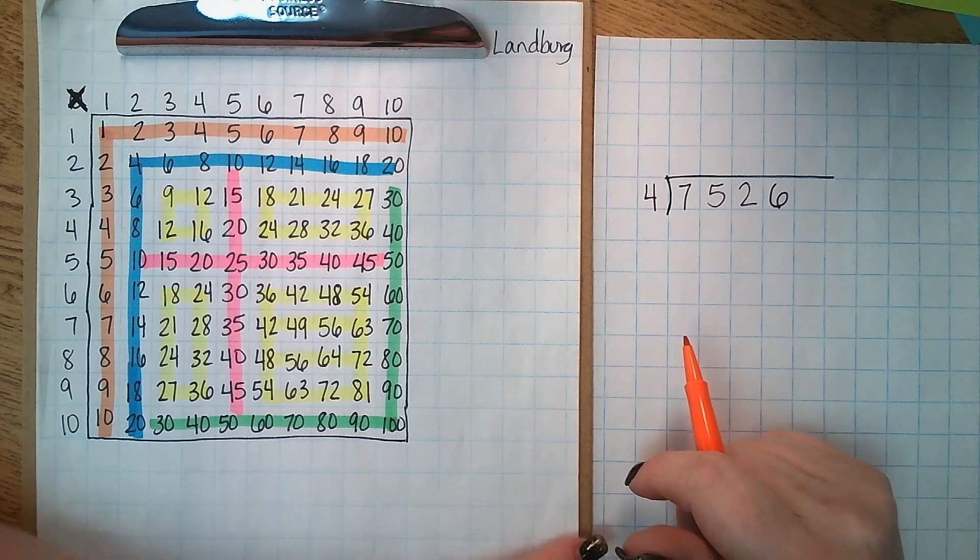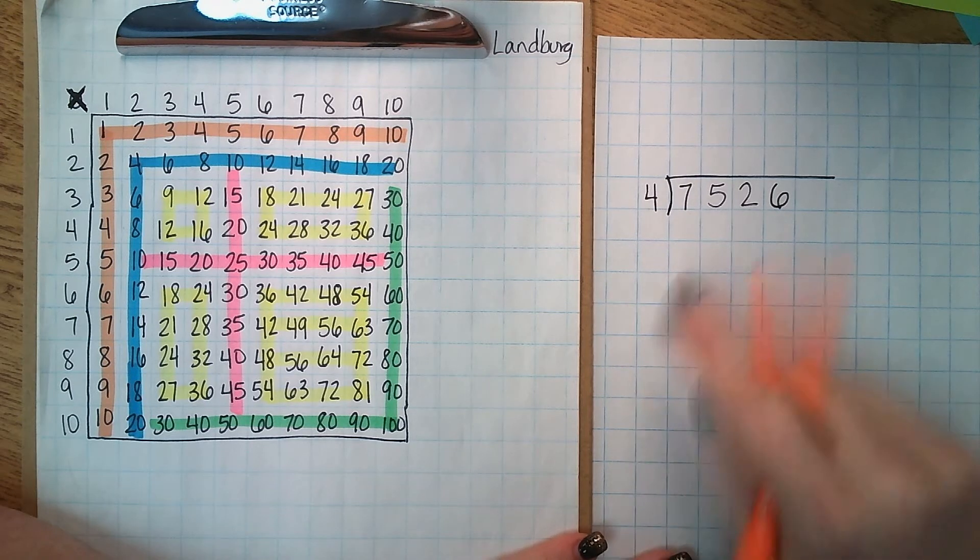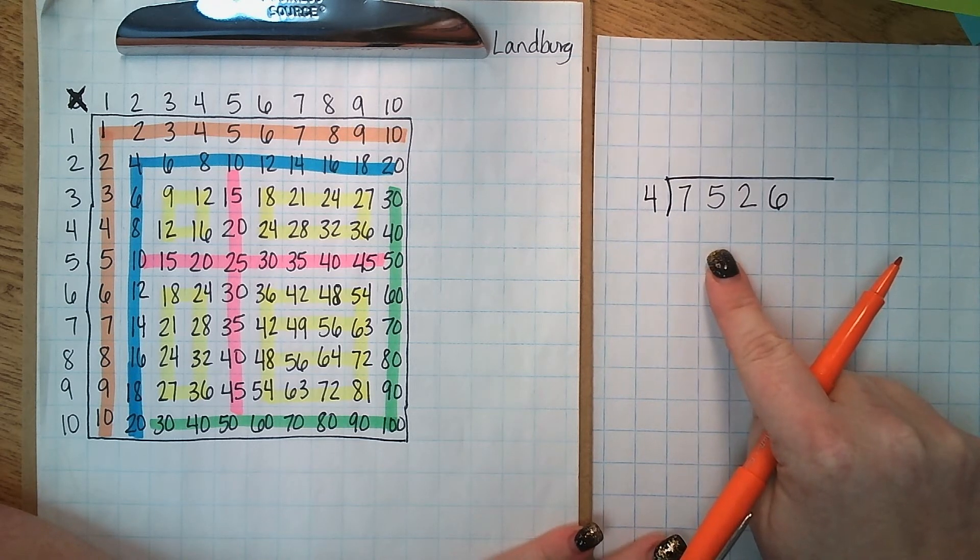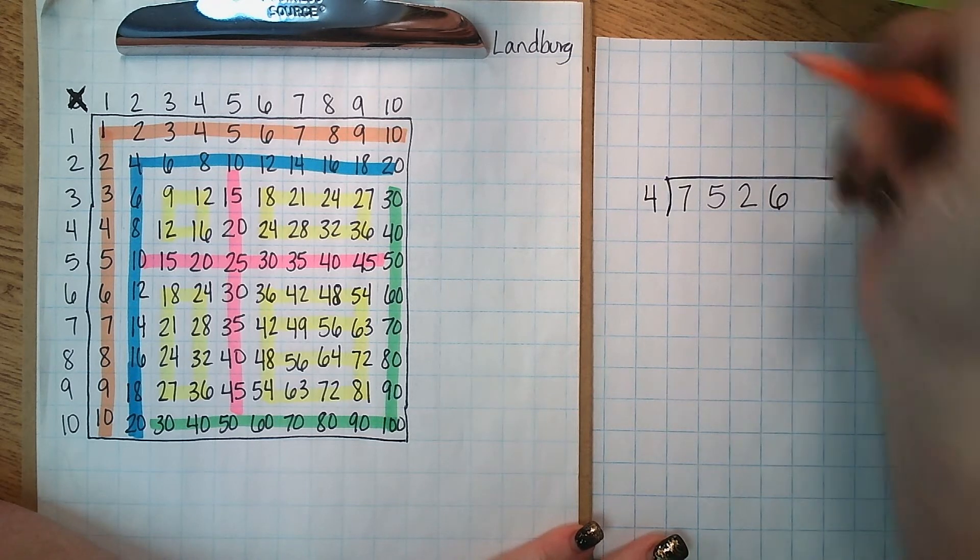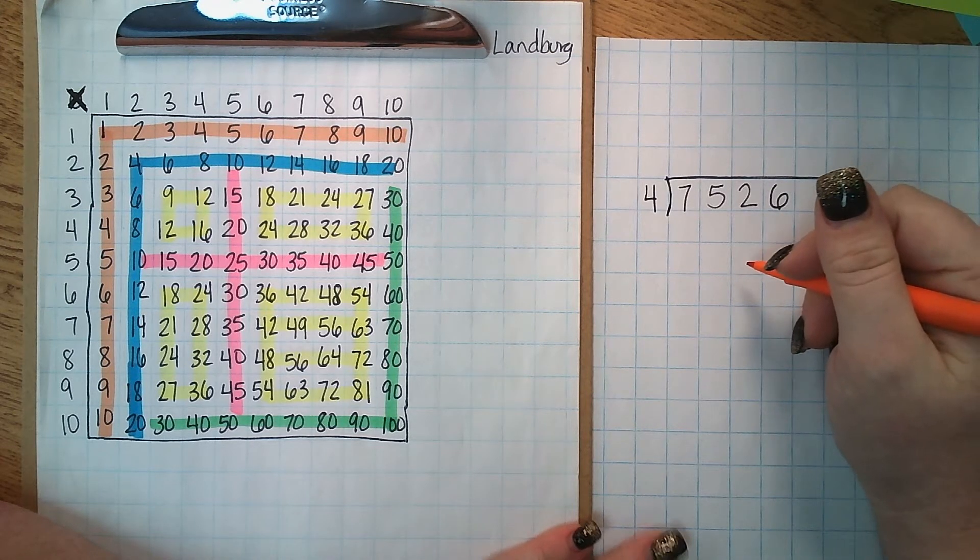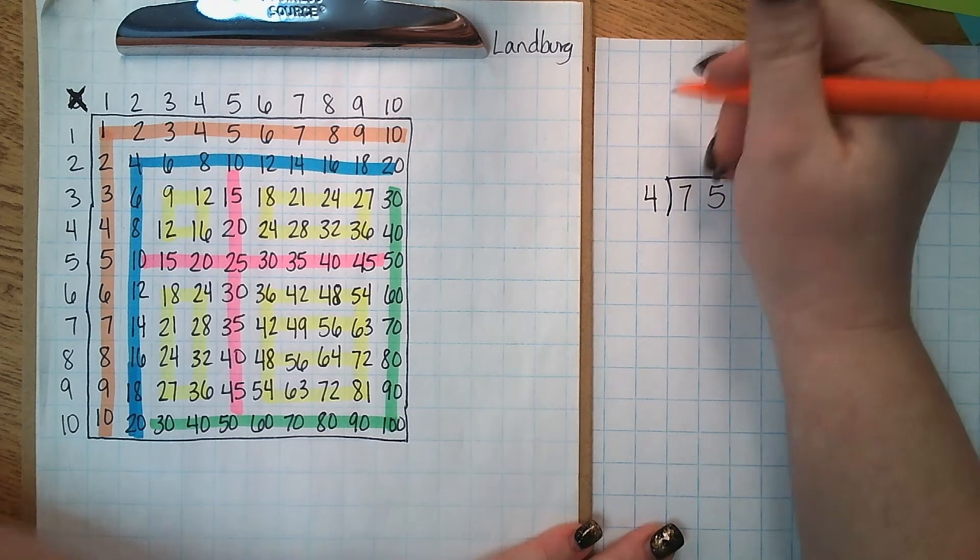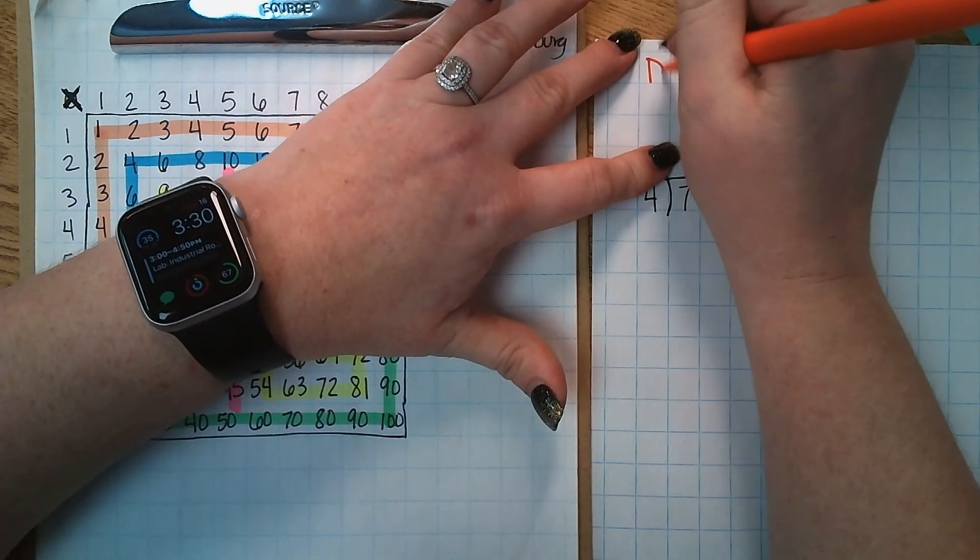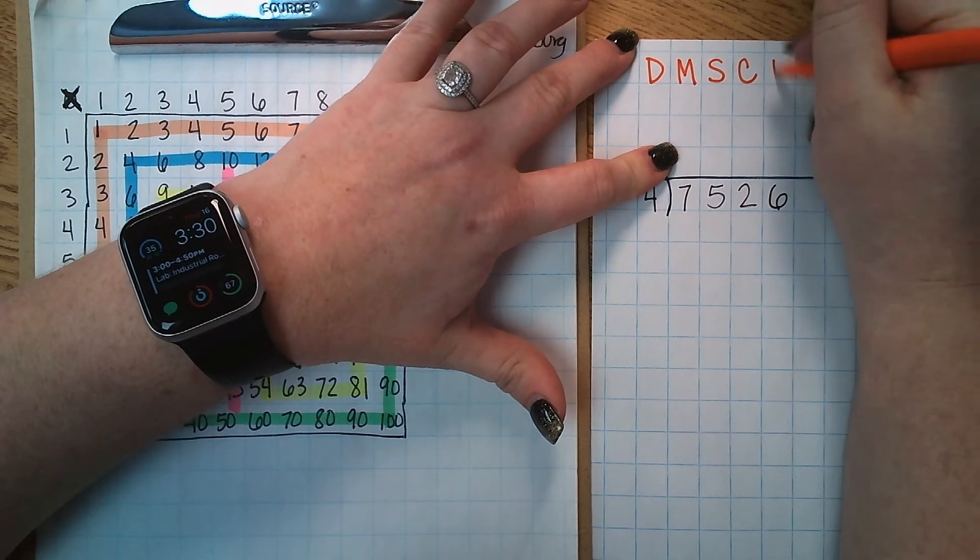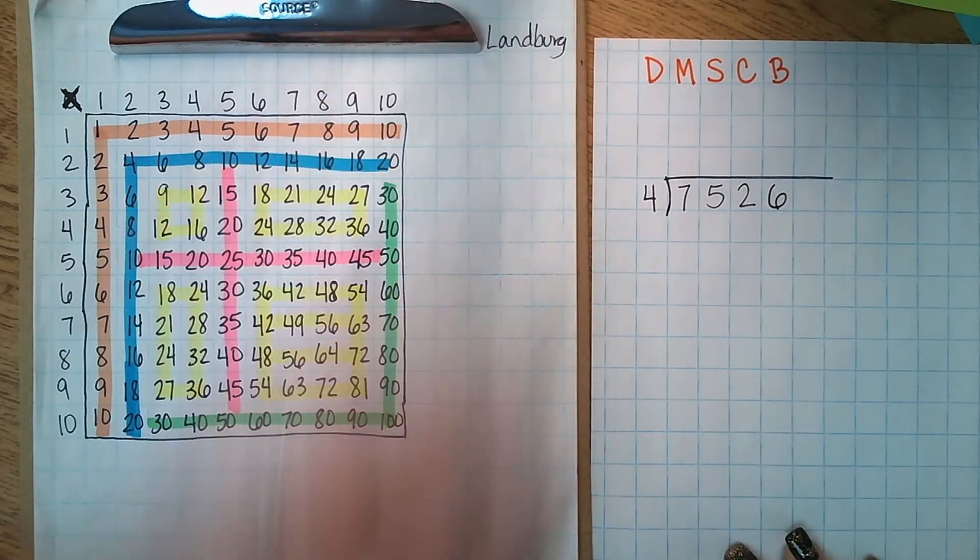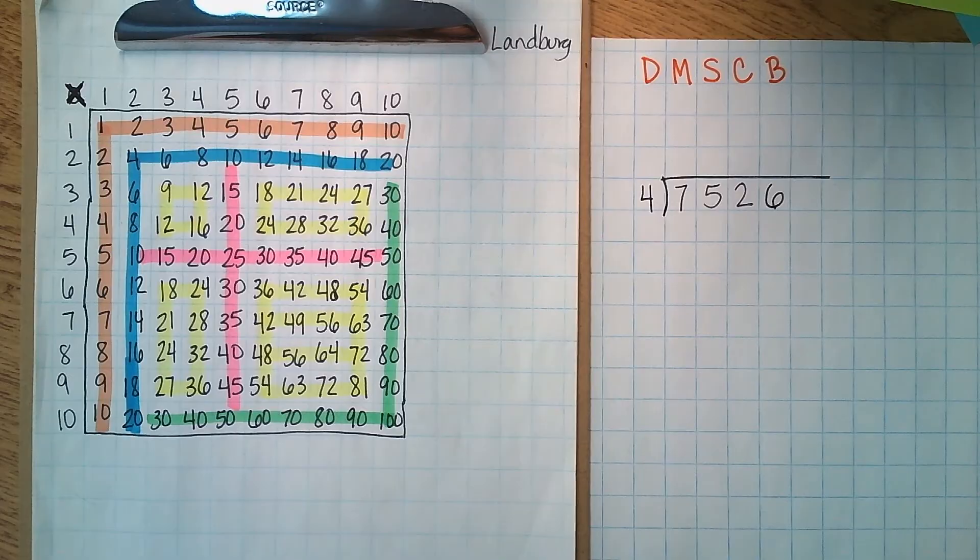The first thing we're going to do here is write down our acronym that we use to solve long division. I have changed it just a tad. We use Does McDonald's Sell Cheeseburgers? So it is DMSCB.